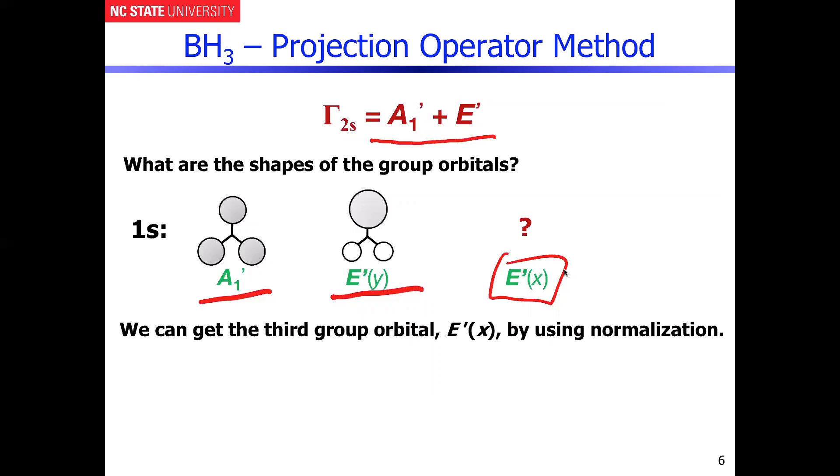For this approach, we have to use what's known as normalization. When you're using normalization, in essence we have to normalize the group orbitals. The good news for us is the atomic orbitals that are constructing the group orbitals are already normalized.